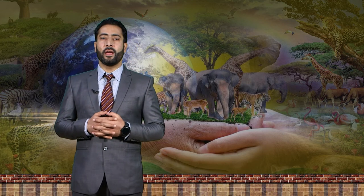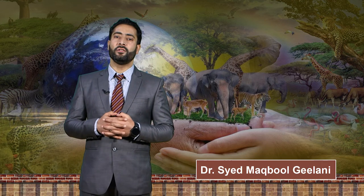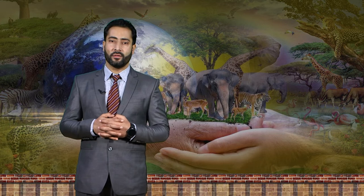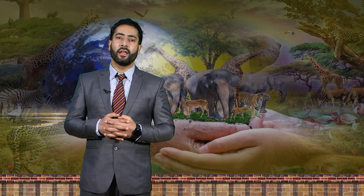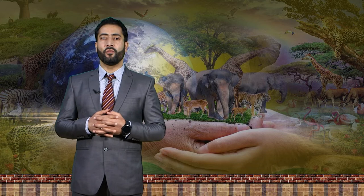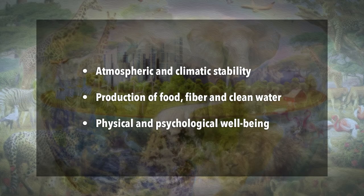Ecosystems and their component organisms use energy to rearrange the chemical molecules of the earth's surface and atmosphere into living tissue according to patterns that have high survival potential. They are in this context anti-entropic — ecosystems and life in general work against the tendency for the molecules of the world to degrade into relatively random arrangements. The proper functioning of the earth's ecosystems is also essential for human beings: for atmospheric and climatic stability, for the production of food, fiber, and clean water, and for physical and psychological well-being.